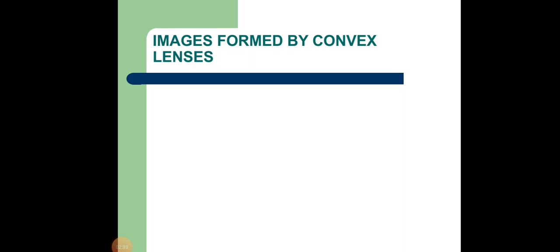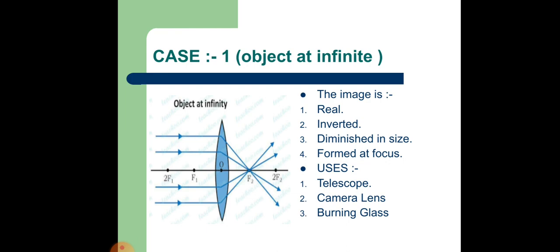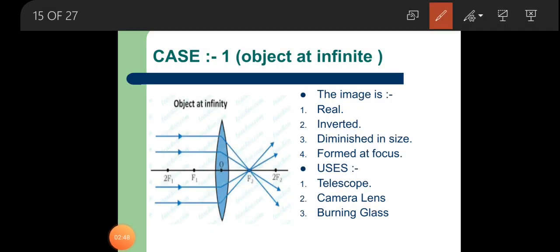First case: object is placed at infinity. Infinity means at a large distance — say 10 or 12 meters. When an object is placed at infinity, rays become parallel to the principal axis. You can see all the rays coming parallel to the principal axis. From Rule 1, whenever a ray comes parallel to the principal axis it will be made to pass through the focus, so all rays meet at the focus point.